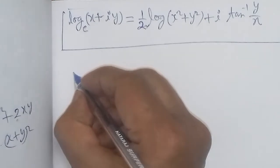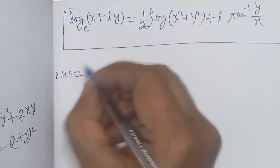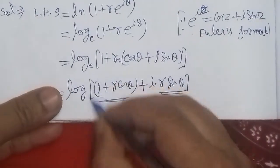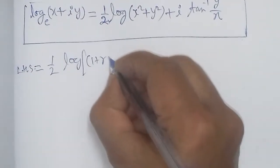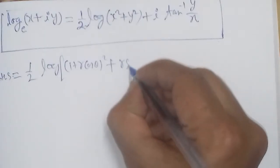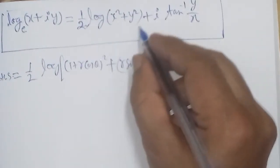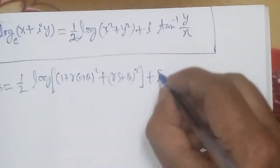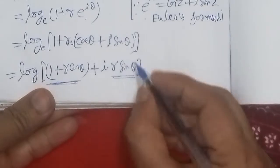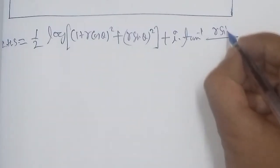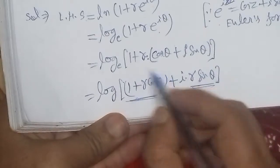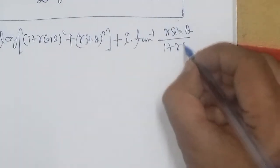We get the left hand side equal to ½·log of [(1 + r·cosθ)² + (r·sinθ)²] plus i·tan⁻¹(imaginary part / real part). The imaginary part is r·sinθ (the coefficient of i), and the real part is (1 + r·cosθ). So the expression becomes ½·log[(1 + r·cosθ)² + (r·sinθ)²] + i·tan⁻¹(r·sinθ / (1 + r·cosθ)).